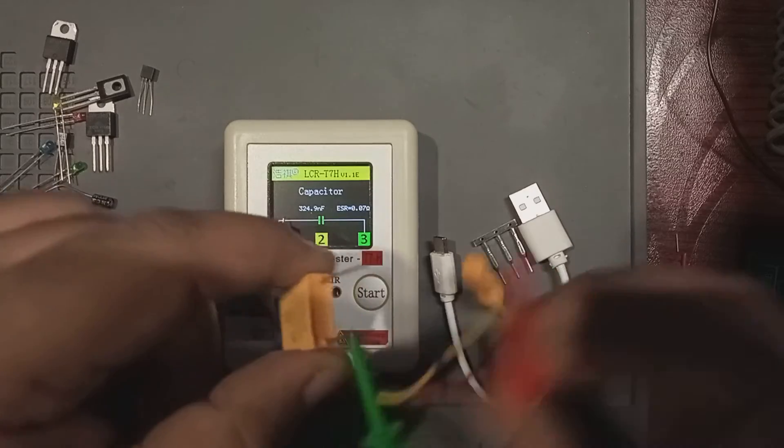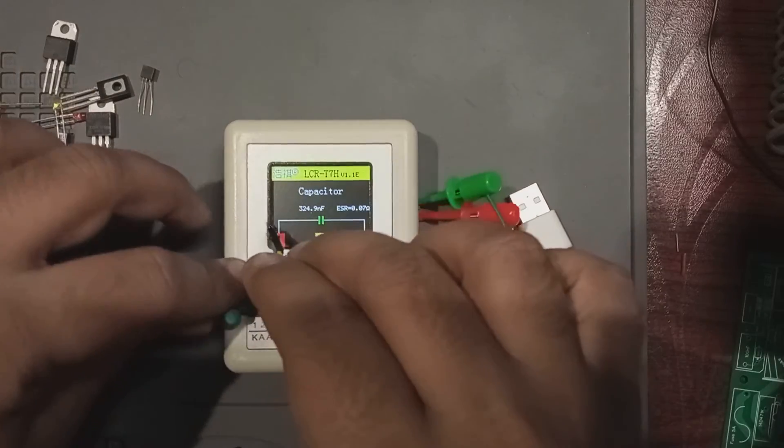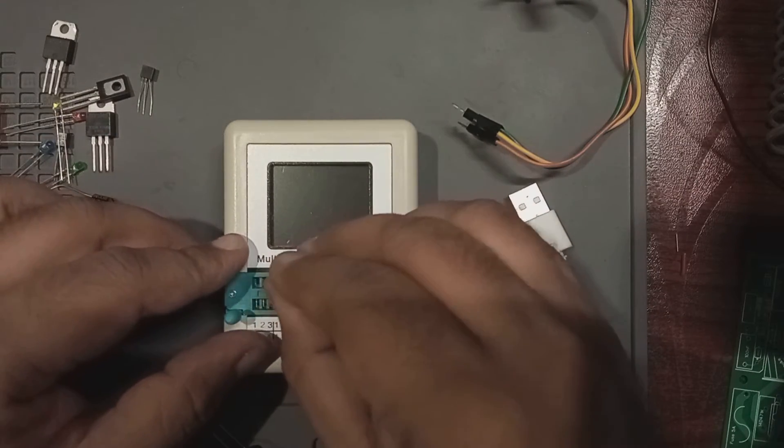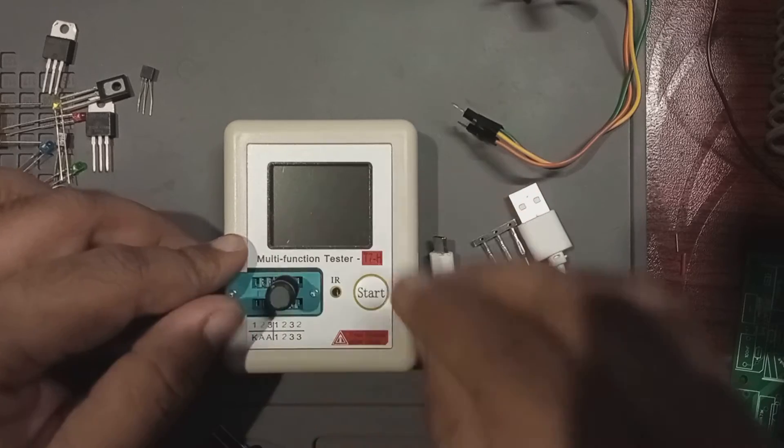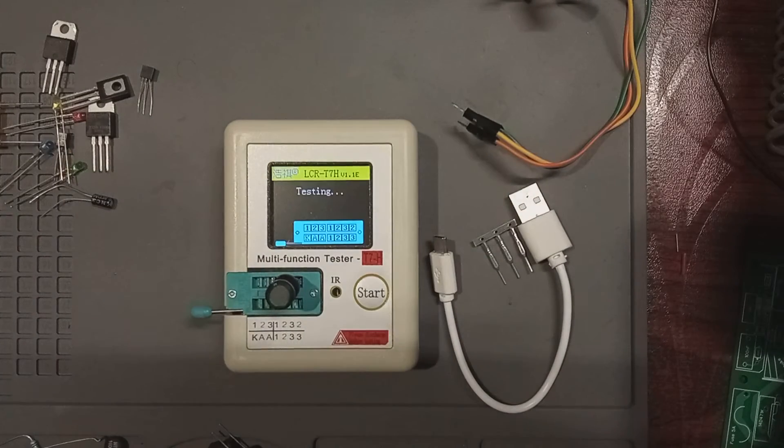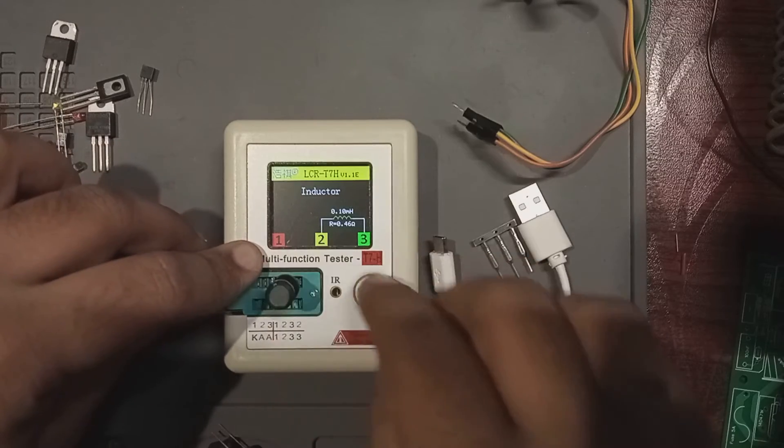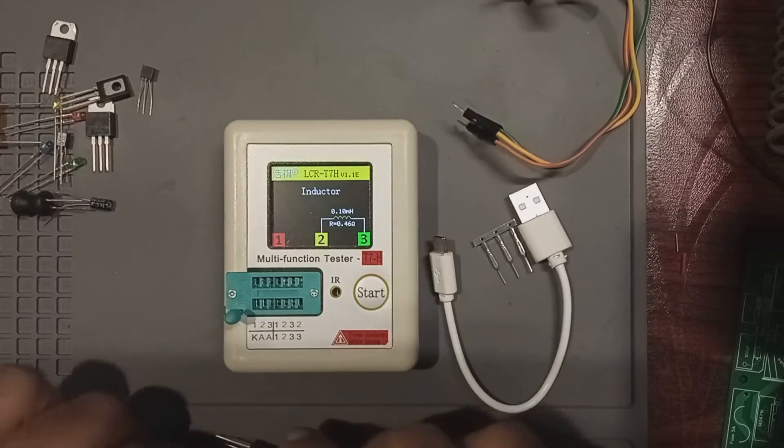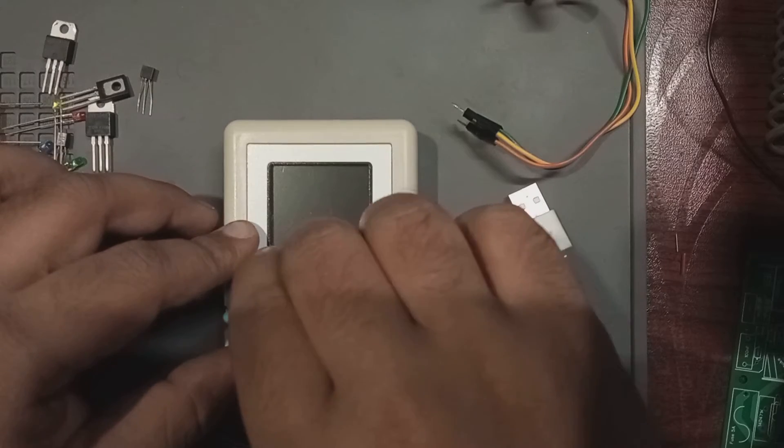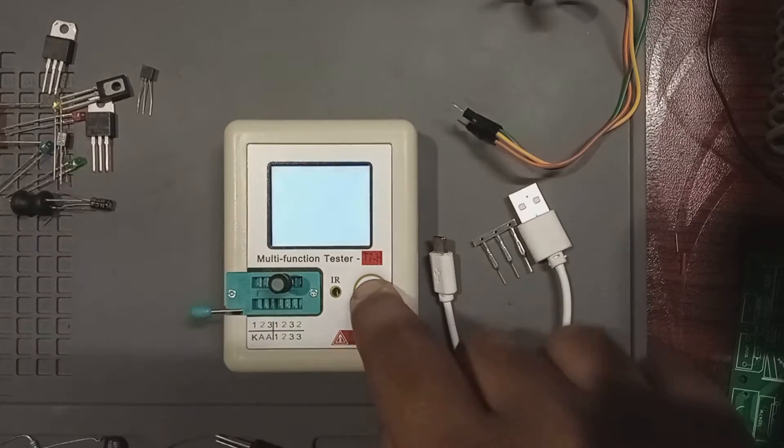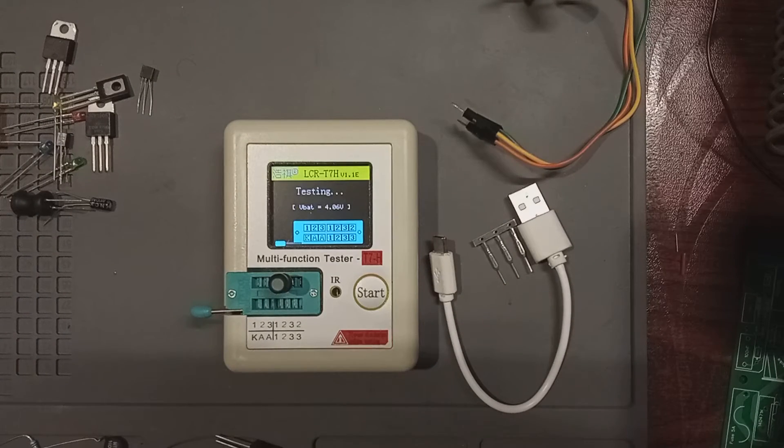Now let's remove these jumpers and test some inductors. Here I have an inductor with, I think, 100 microhenries value, but there's no indication. If you put the inductor in this meter and press the start button, it is detected as 0.1 millihenries or 100 microhenries inductor with an ESR of about 0.46 ohms. Now let's connect another one. And I think this is 10 millihenries just by the size that I have in here. Looks like it is 1.1 millihenries or 1 millihenry actually, with an ESR of 45.3 ohms, which is quite high.